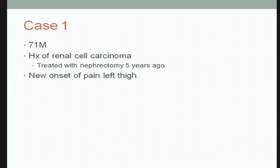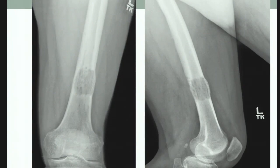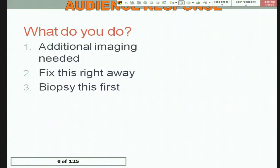Case one: a 71-year-old male with a history of renal cell carcinoma treated with nephrectomy five years ago, who develops new onset of left thigh pain. His x-rays show a lytic lesion in the distal third of his femur. It's exquisitely painful to touch and weight bear, and he was admitted to the hospital urgently.